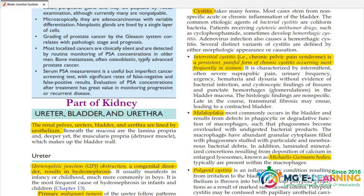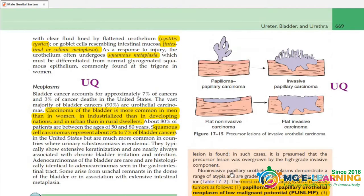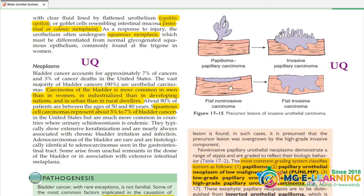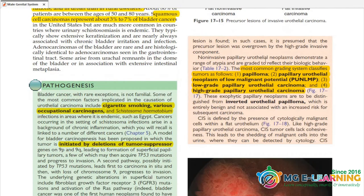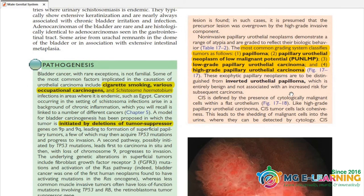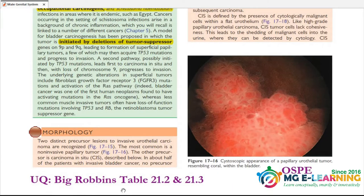These questions are important. Using the easiest method to analyze an image is important. The classification here is very good to have. Refer to Robbins Table 21.2 and 21.3 — these will be easily covered.